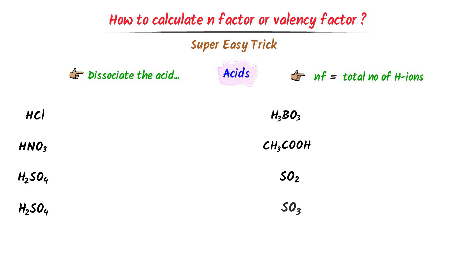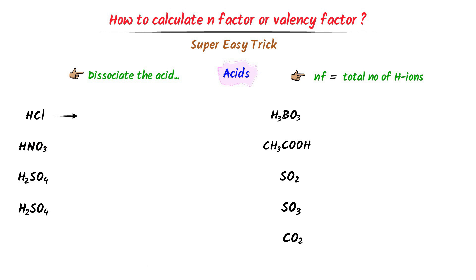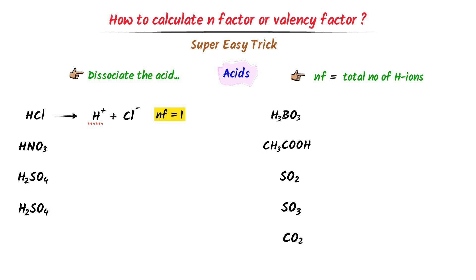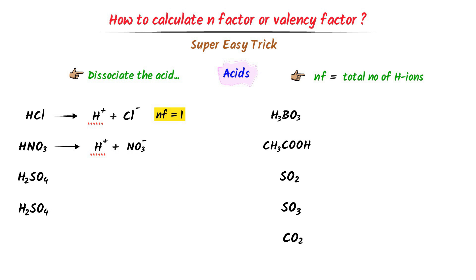Consider these acids. When HCl dissociates, it produces a hydrogen ion and a chlorine ion. There is only one hydrogen ion, so the n-factor of HCl is 1. In case of nitric acid, when it dissociates, it produces one hydrogen ion and one nitrate ion. There is only one hydrogen ion, so the n-factor of nitric acid is also 1.